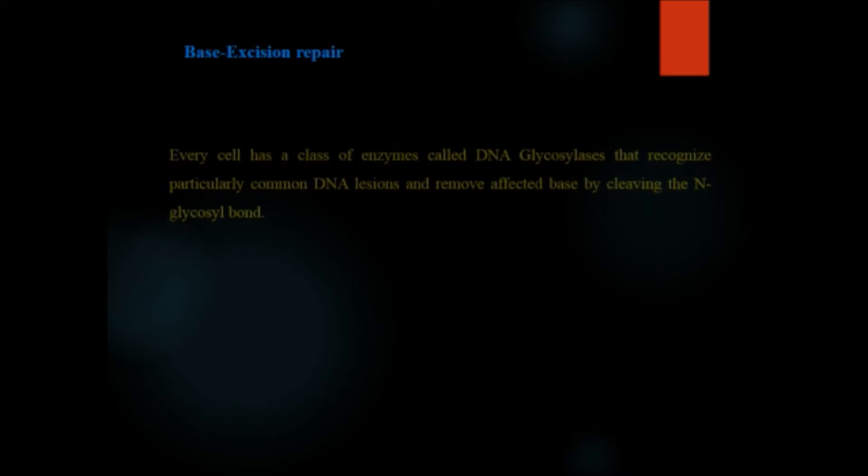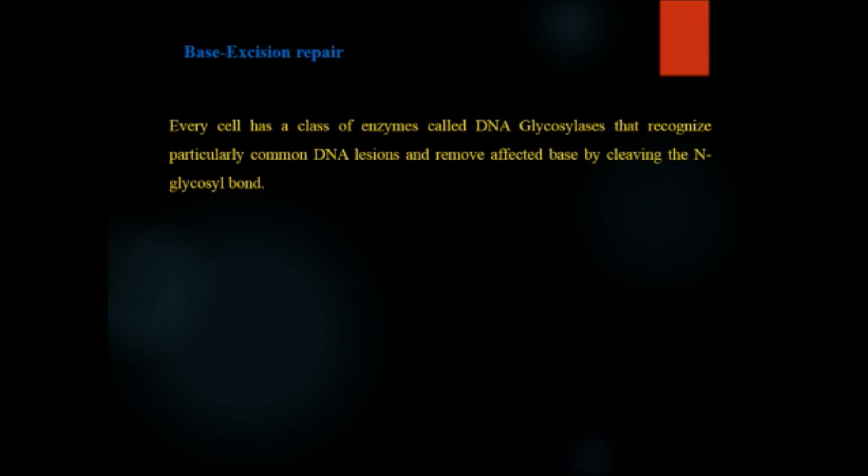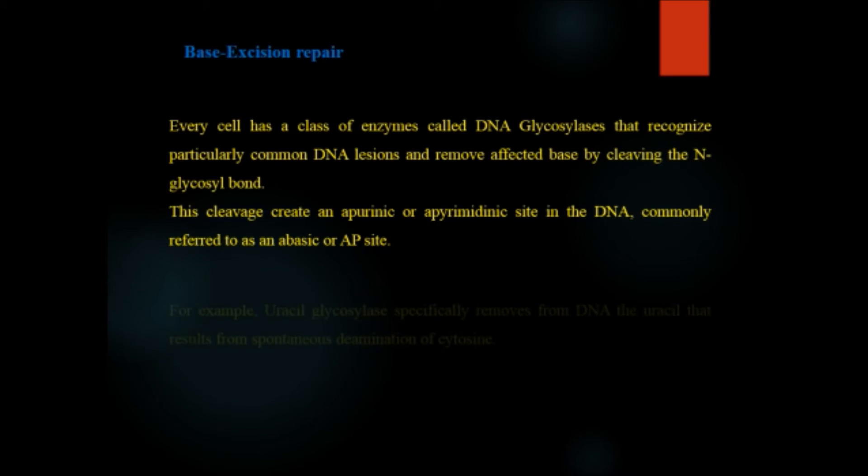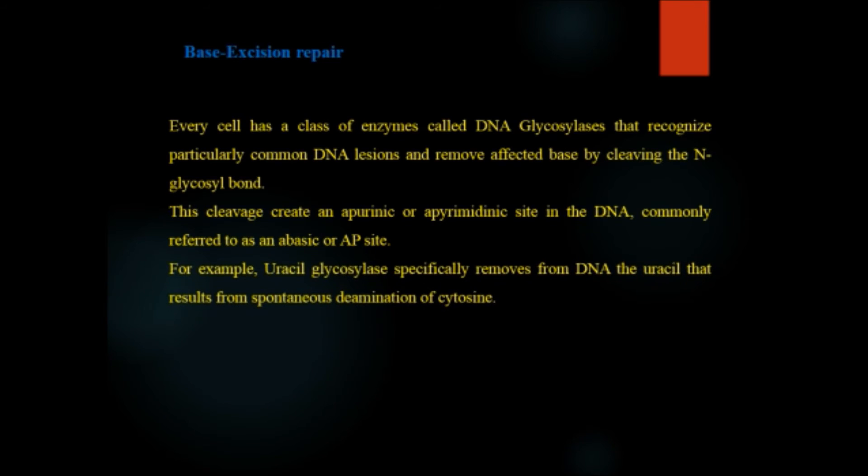Now the base excision repair. Every cell has a class of enzymes called DNA glycosylases that recognize particular common DNA lesions and remove the defective base by cleaving the N-glycosyl bond. This cleavage creates an apurinic or apyrimidinic site in the DNA, commonly referred to as an abasic or AP site. For example, uracil glycosylase specifically removes from DNA the uracil that results from spontaneous deamination of cytosine. Similarly, DNA glycosylase recognizes and removes hypoxanthine, which arises from adenine deamination.